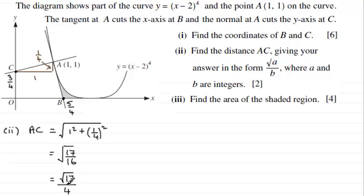And we've got this in the form root of A over B, where A and B are integers. A would be 17, and B would be the 4. Okay, well, moving on.